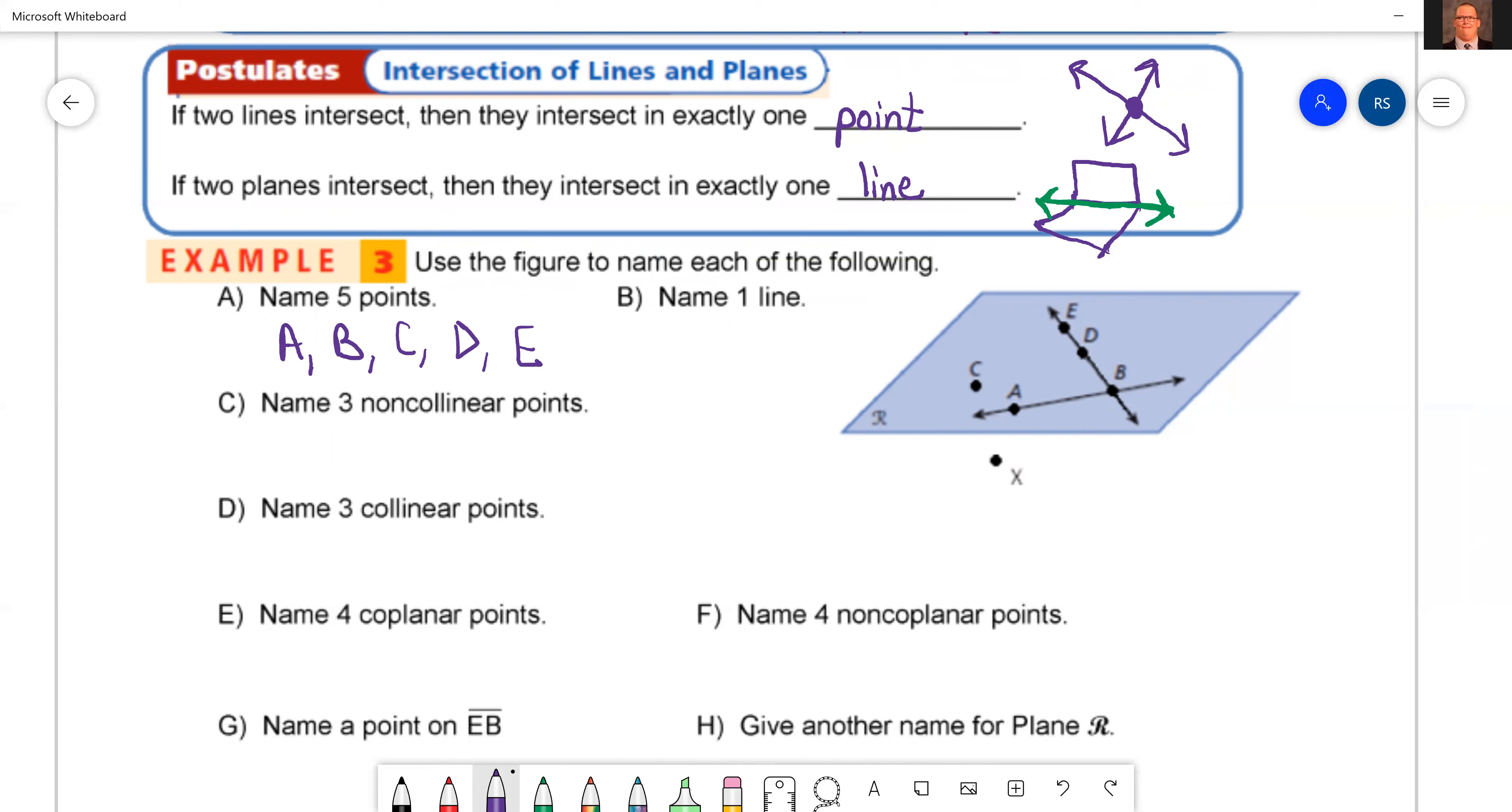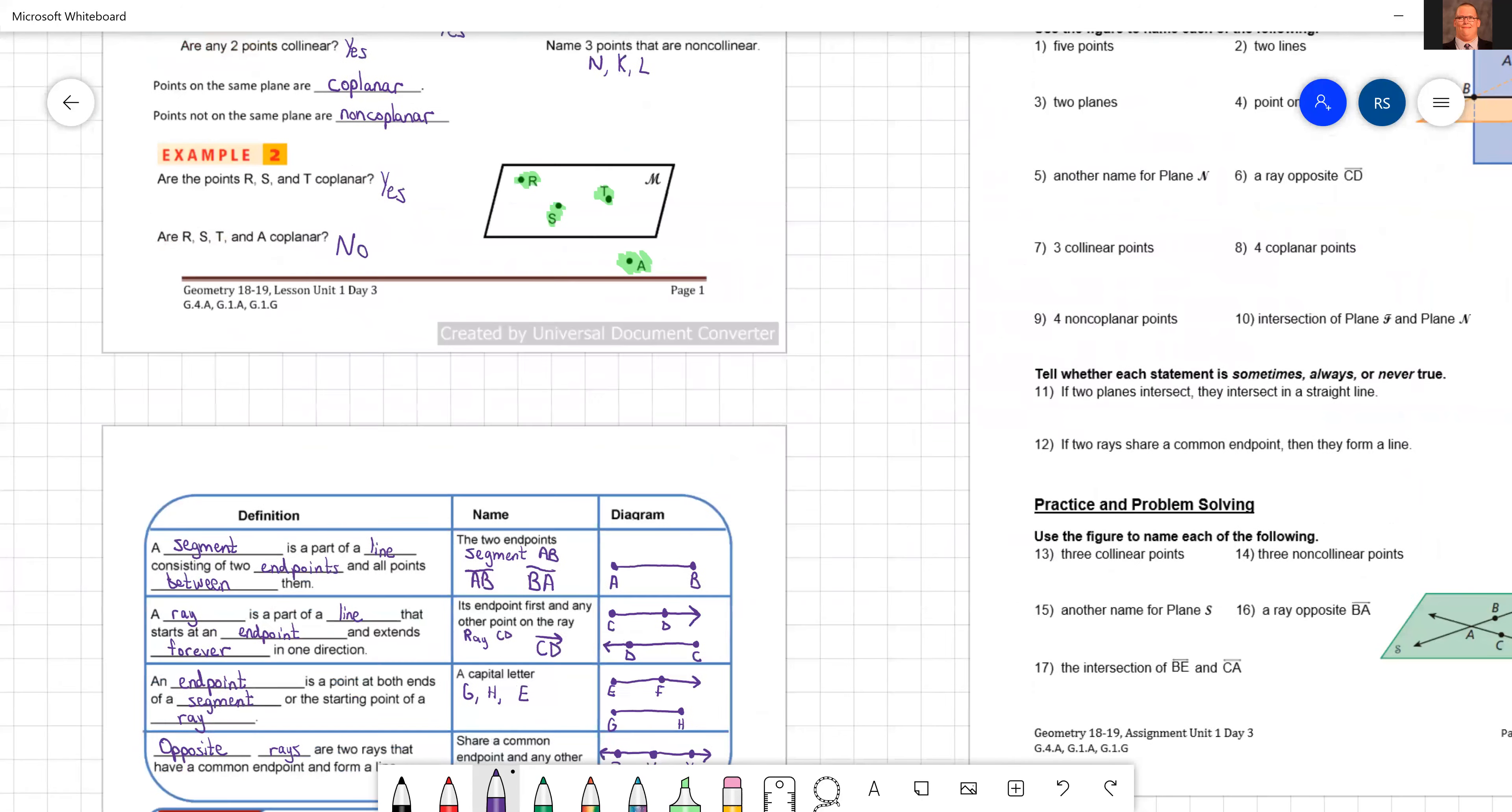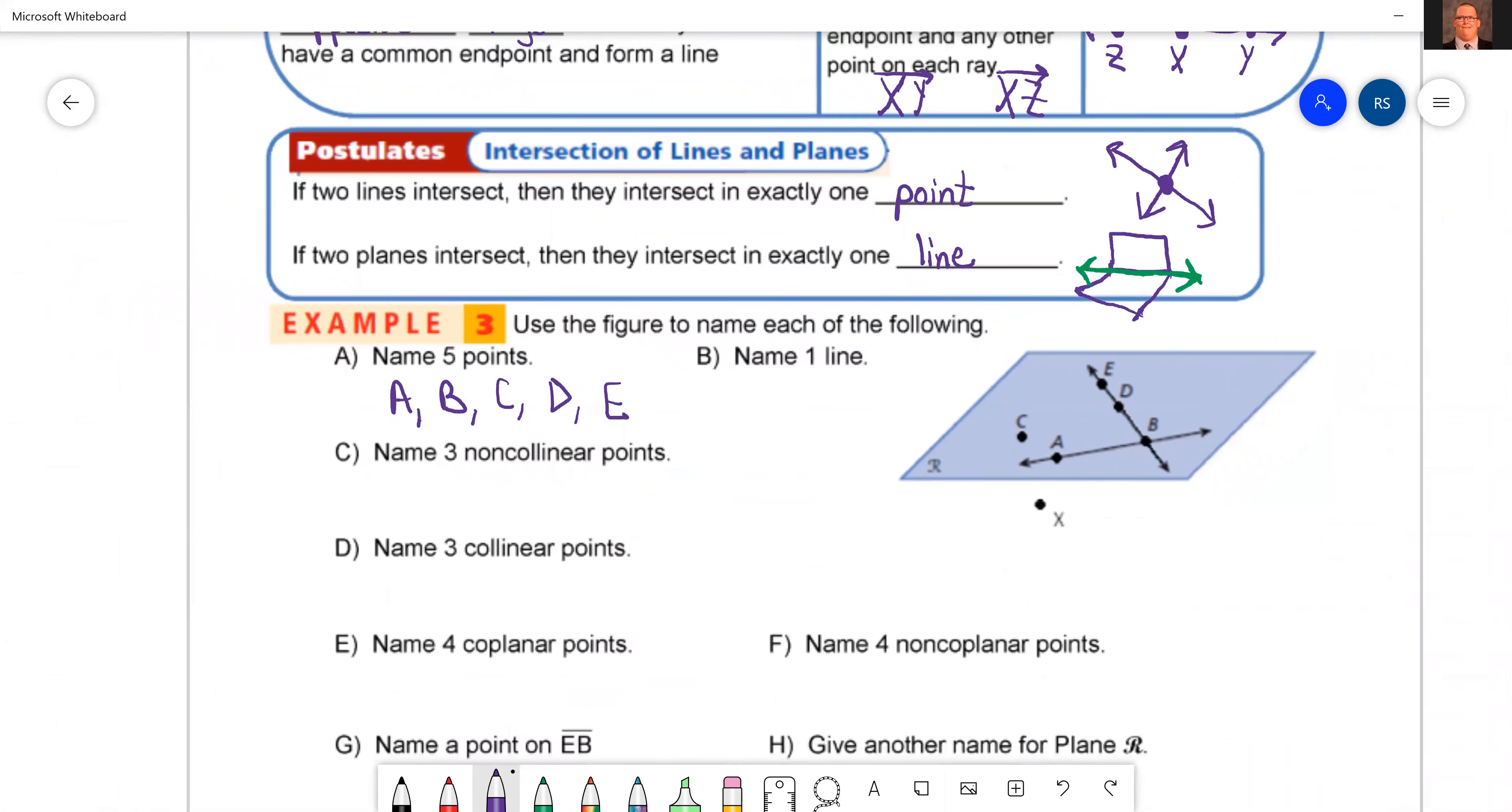If you put X, in this case okay, because they didn't specify if they had to be anything the same, just five points. Name one line. Oh, there's two lines on the screen. I could say, there's again tons of different lines you could use. I'm going to use line EB. I'm going to put this line over it like that.